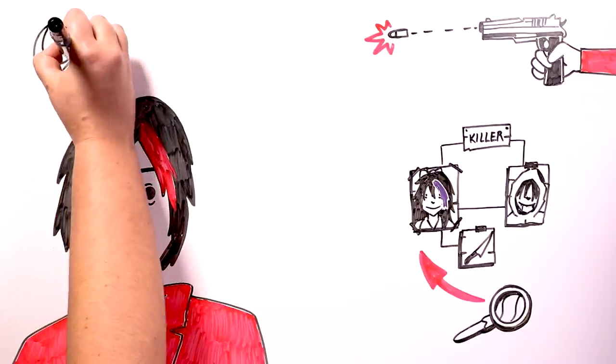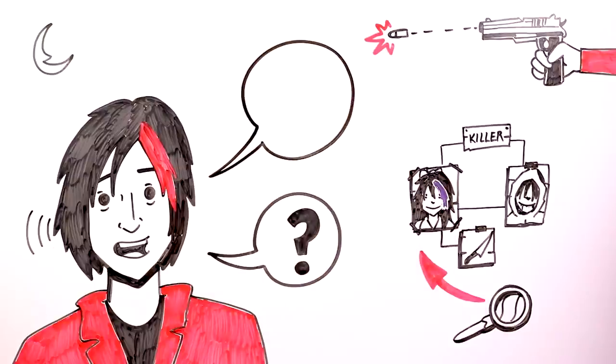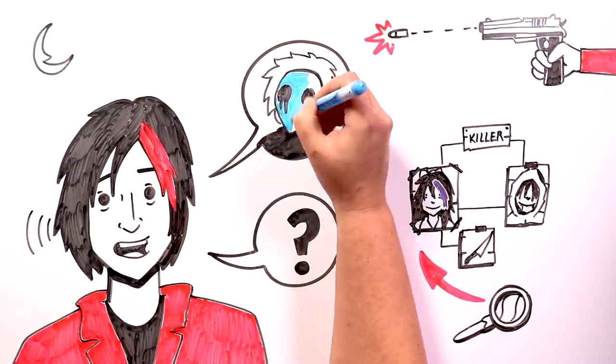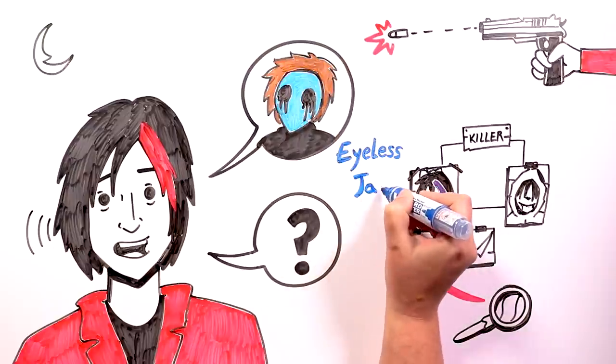And one night, while I was absorbed with these thoughts, I heard something in the distance. 'What are you doing here so late?' It had a blue mask with empty eye sockets. I asked him who he was, to which he replied, 'Eyeless Jack.'